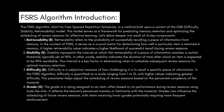Next we have difficulty. Difficulty is a subjective measure of how challenging it is to recall a specific piece of information. In the FSRS algorithm, difficulty is quantified on a scale ranging from 1 to 10, with higher values indicating greater difficulty. This parameter helps adjust the scheduling of review sessions based on the perceived complexity of the material. Grade is a rating assigned to an item based on its performance during review sessions — that's just Again, Hard, Good, and Easy, the four grades you'll see in Anki.